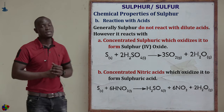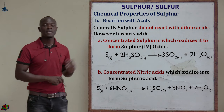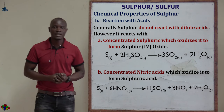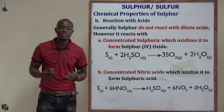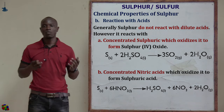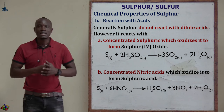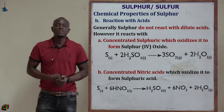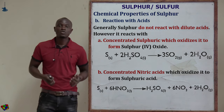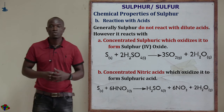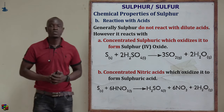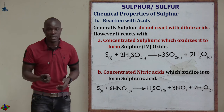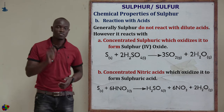Examples of sulfur reacting with oxidizing acids: sulfur reacting with concentrated nitric acid gives sulfuric acid, nitrogen dioxide (NO₂), and water. Sulfur reacting with concentrated sulfuric acid gives sulfur dioxide (SO₂) and water molecules. Sulfur does not react with dilute acid but reacts with oxidizing acids to give sulfur dioxide.